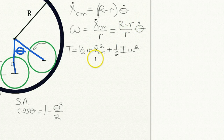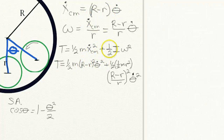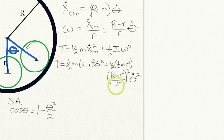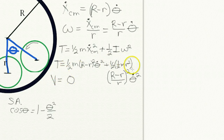Writing it all out: the kinetic energy is one-half m times big R minus little r squared times theta-dot squared, plus one-half times one-half m r squared times big R minus little r divided by little r, all squared times theta-dot squared. At the equilibrium position, the potential energy is zero, so the total energy equals this kinetic energy expression.